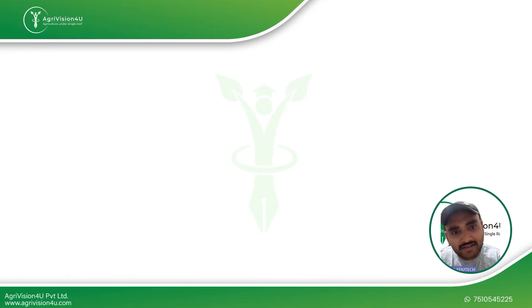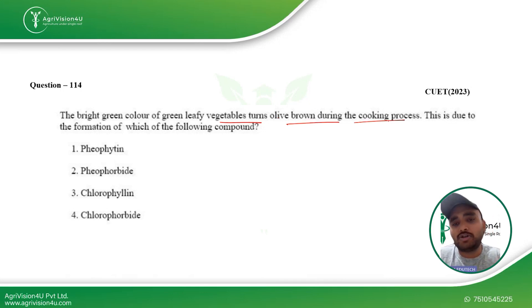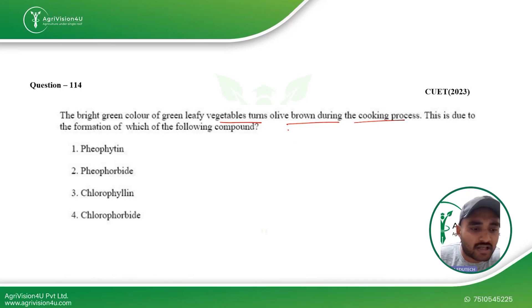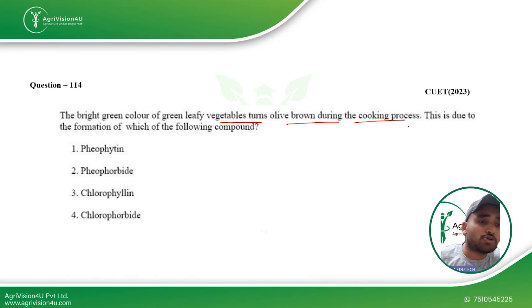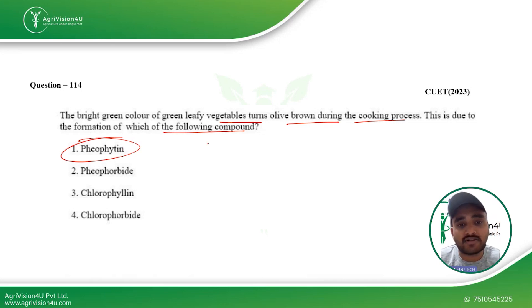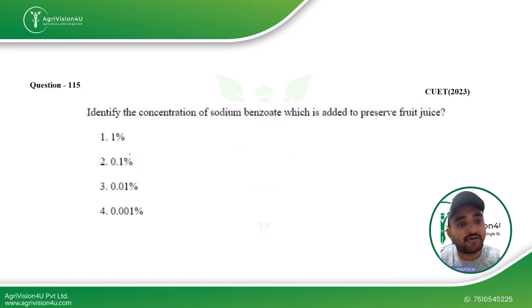The next question: the bright green color of green leafy vegetables turns into olive brown during cooking. You've all observed this — when you cook spinach or other green leafy vegetables, the color turns into an olive brown or dark greenish shade. This is due to the formation of pheophytin, which turns the green color into olive brown. So the first option is the right answer.